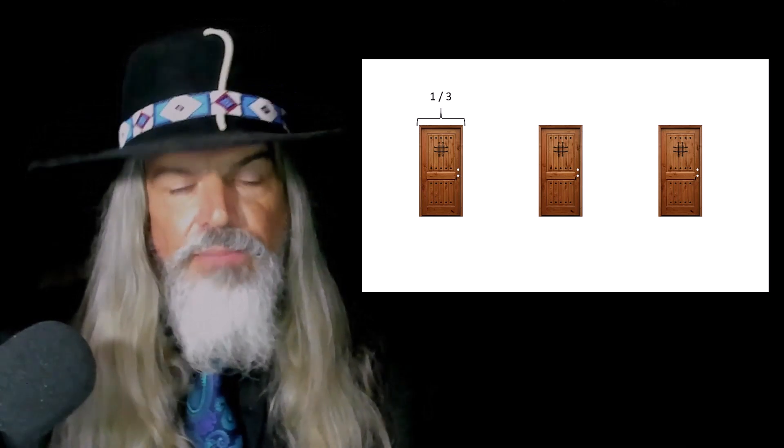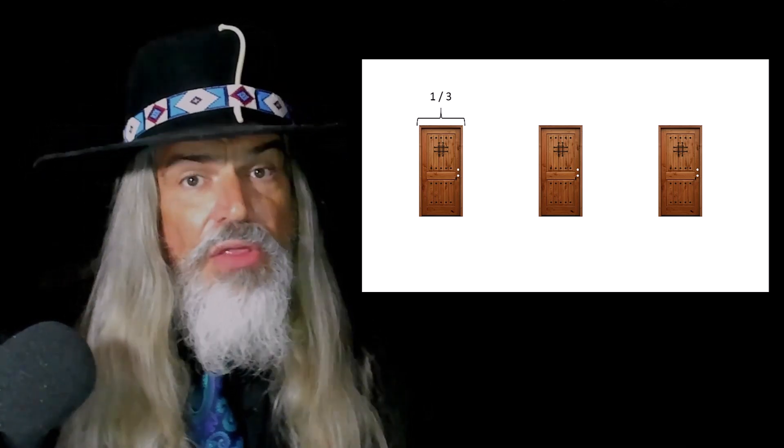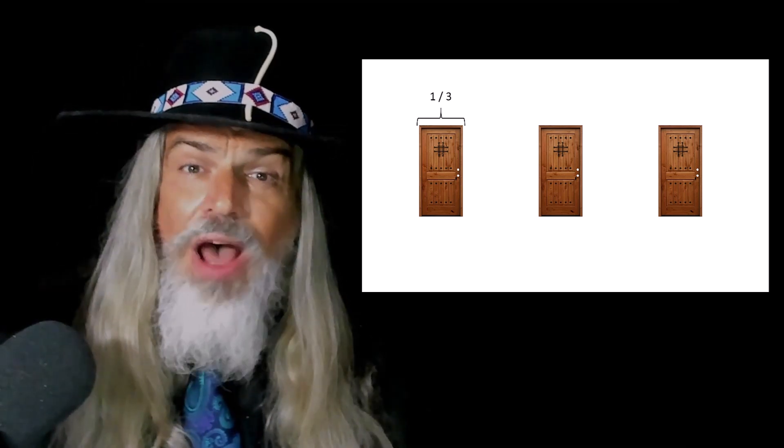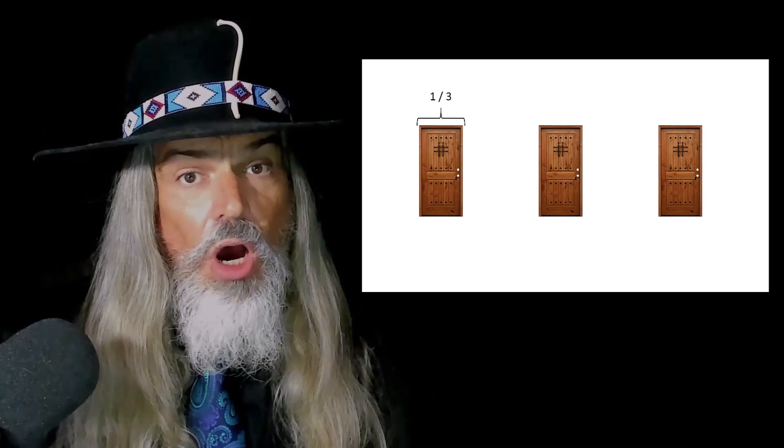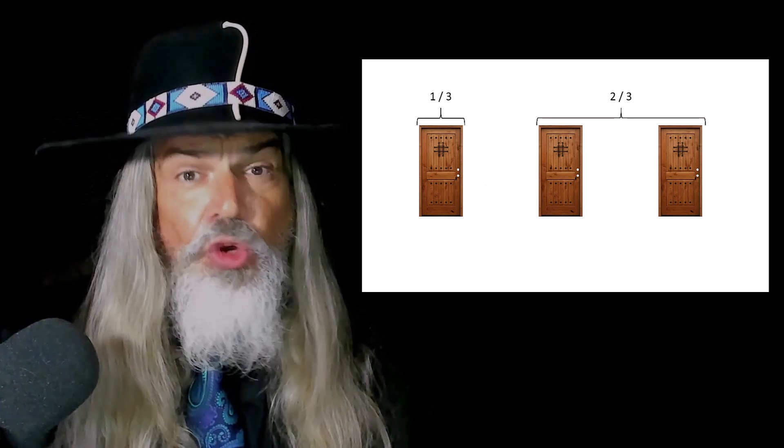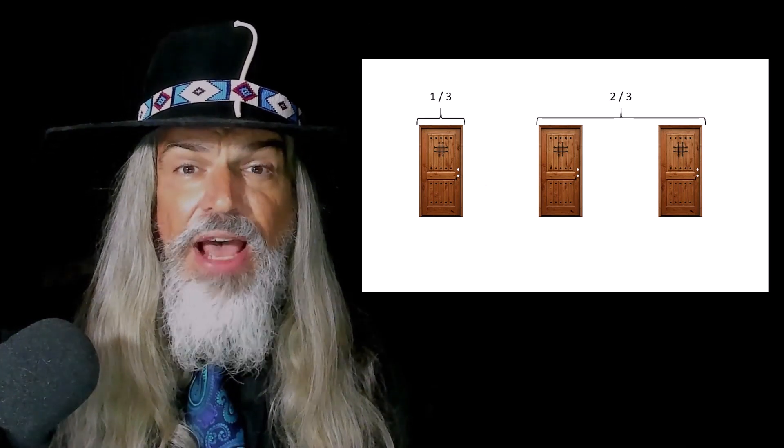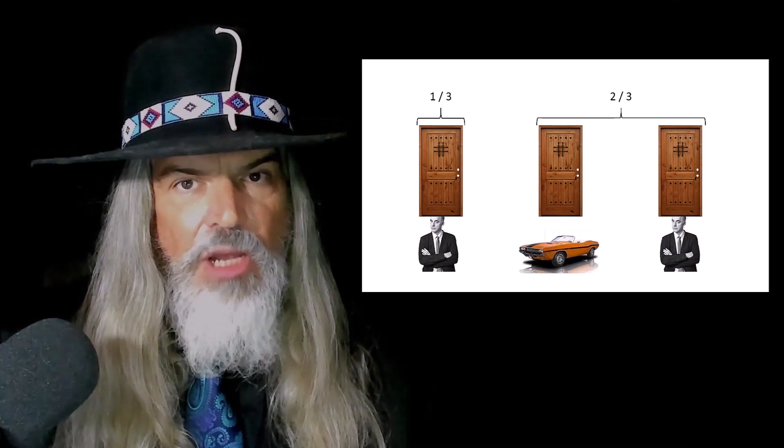So, originally, we've got three doors. You chose one. Therefore, there's a one in three chance that the door you chose has the car. There's a two in three chance that the car's behind one of the remaining two doors. That's simple.